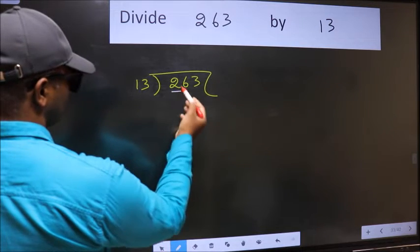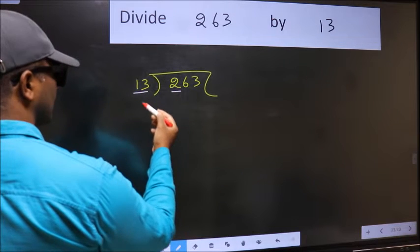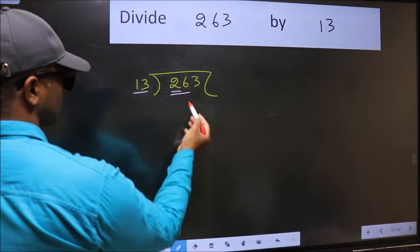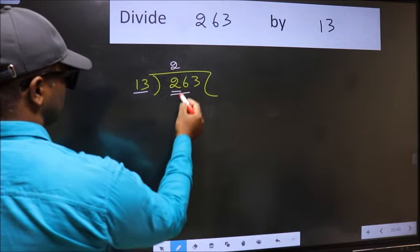Here we have 2 and here 13. 2 is smaller than 13. So we should take 2 numbers, 26. When do we get 26 in 13 table? 13 times 2 is 26.